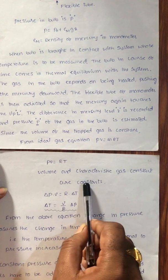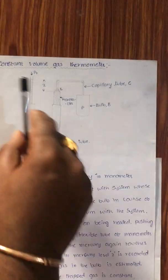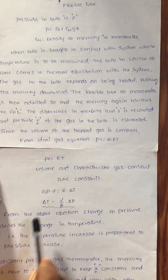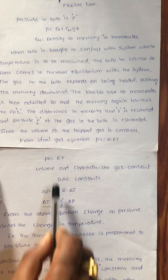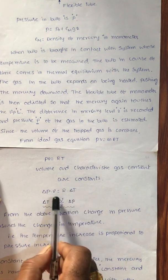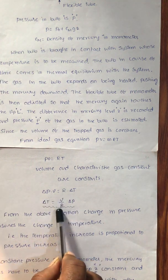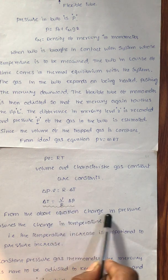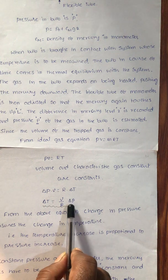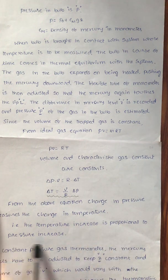Volume and characteristic gas constant R are constant. Volume is already constant because this is a constant volume gas thermometer. Therefore, δP = V·R·δT, which gives δT = (V/R)·δP. Since V/R is constant, from the change in pressure δP we can measure the change in temperature δT. That is, the temperature increase is proportional to the pressure increase.